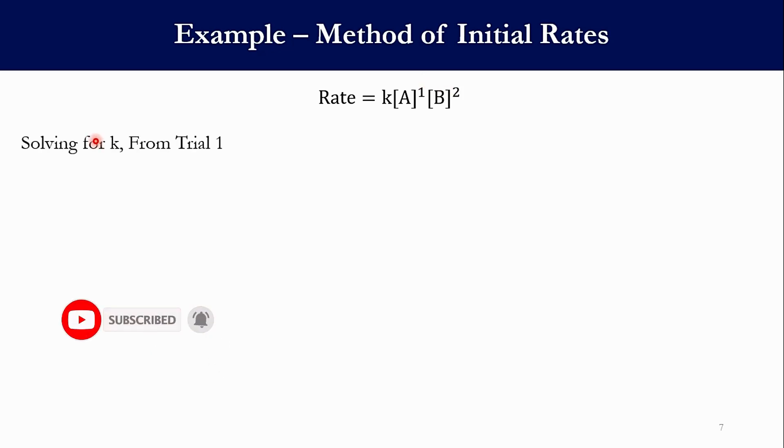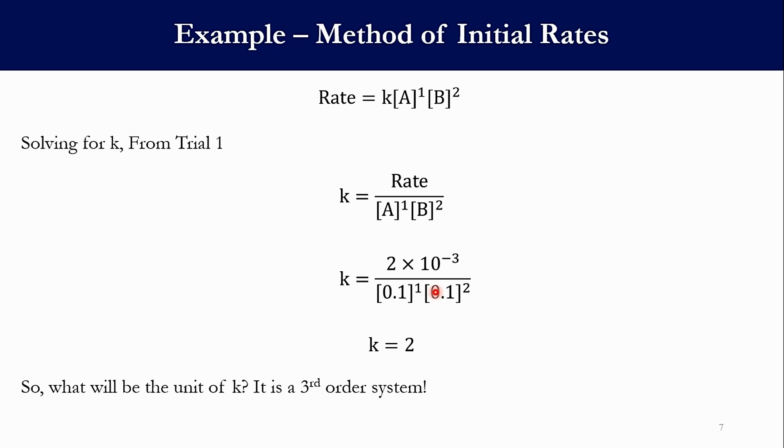Now solving for K, obviously from trial 1: K = Rate/([A]¹[B]²). For Rate₁ the value is 2×10⁻³, [A₁] value is 0.1, [B] value in the first trial is 0.1. So accordingly we get the value of K as 2. And the unit of K obviously it will be for the third order system, and corresponding unit will be used.